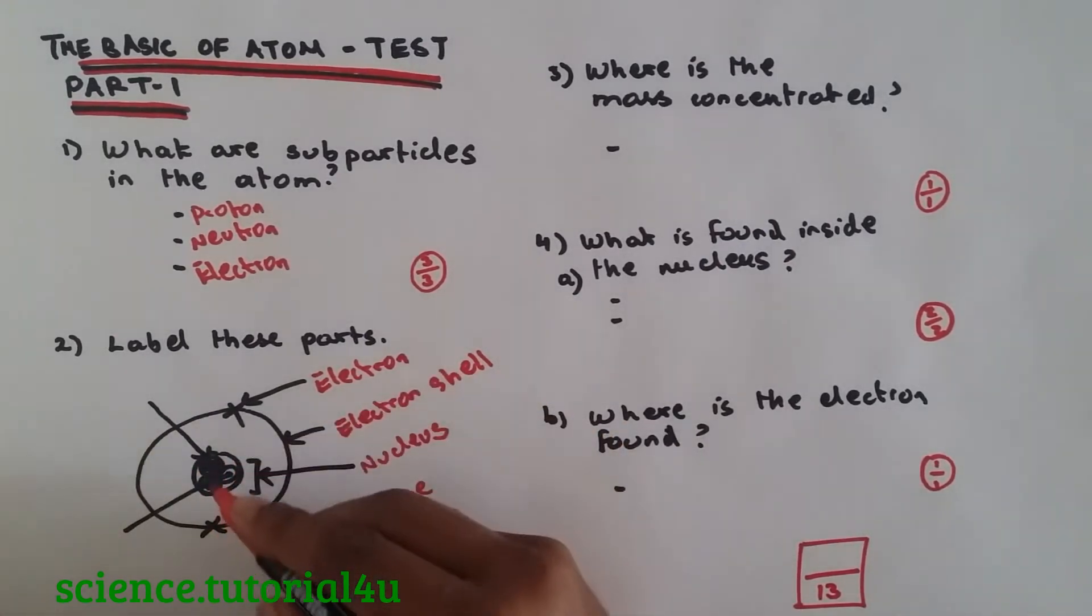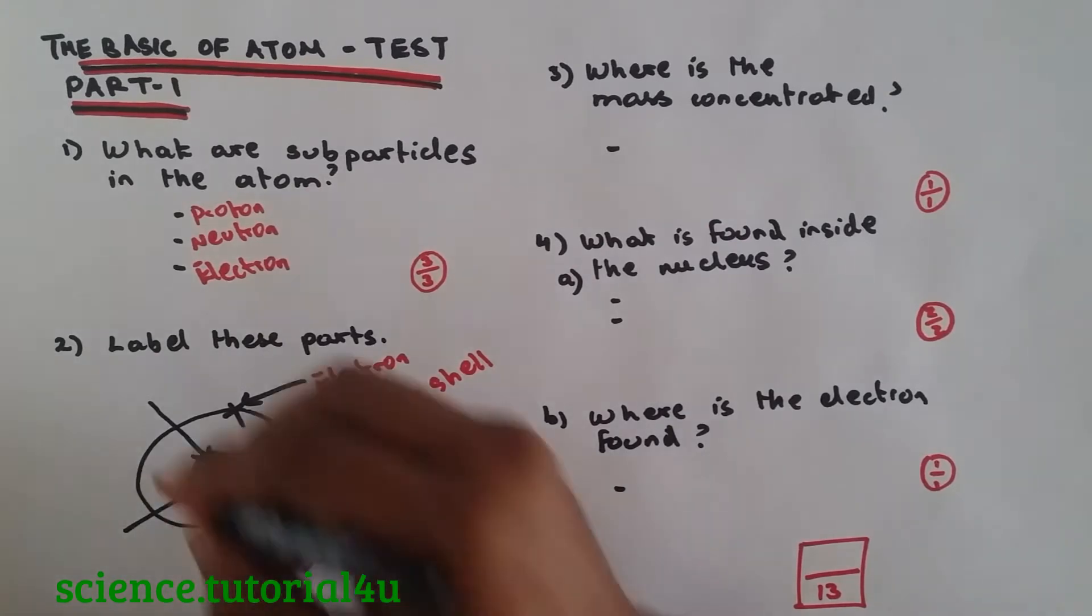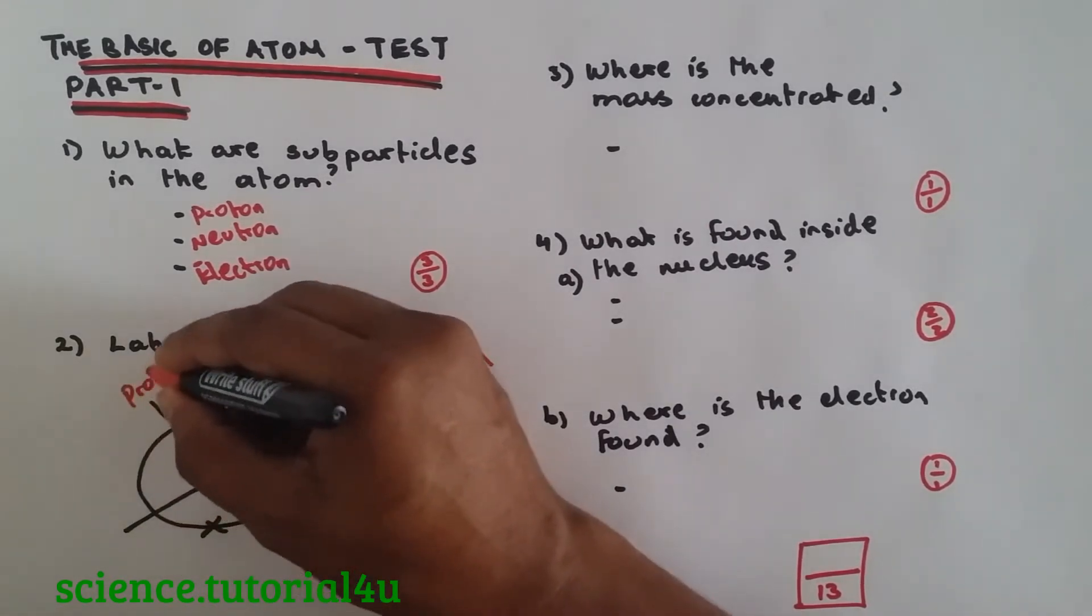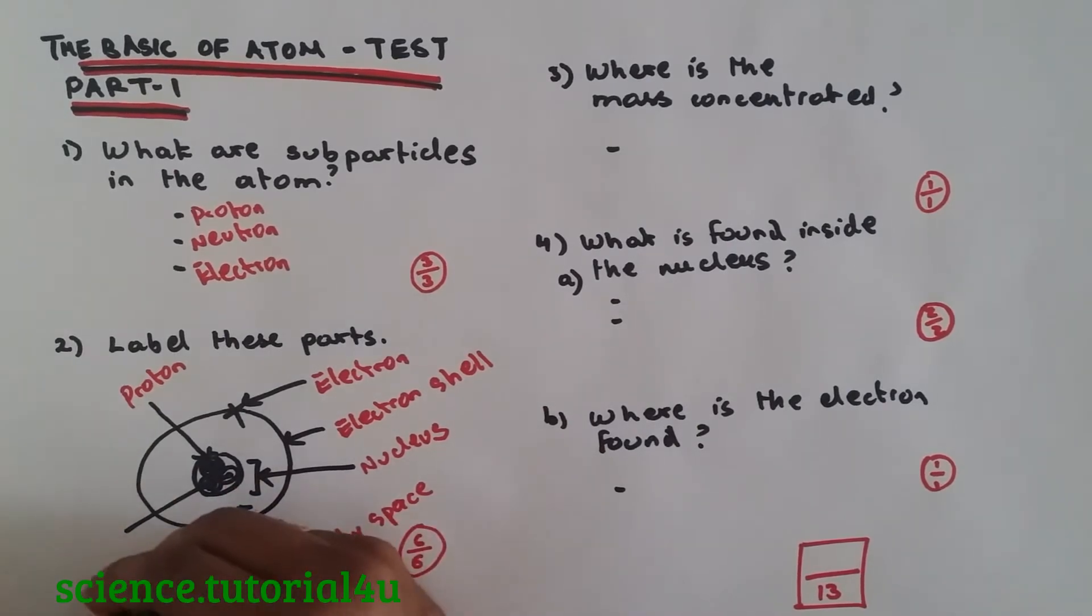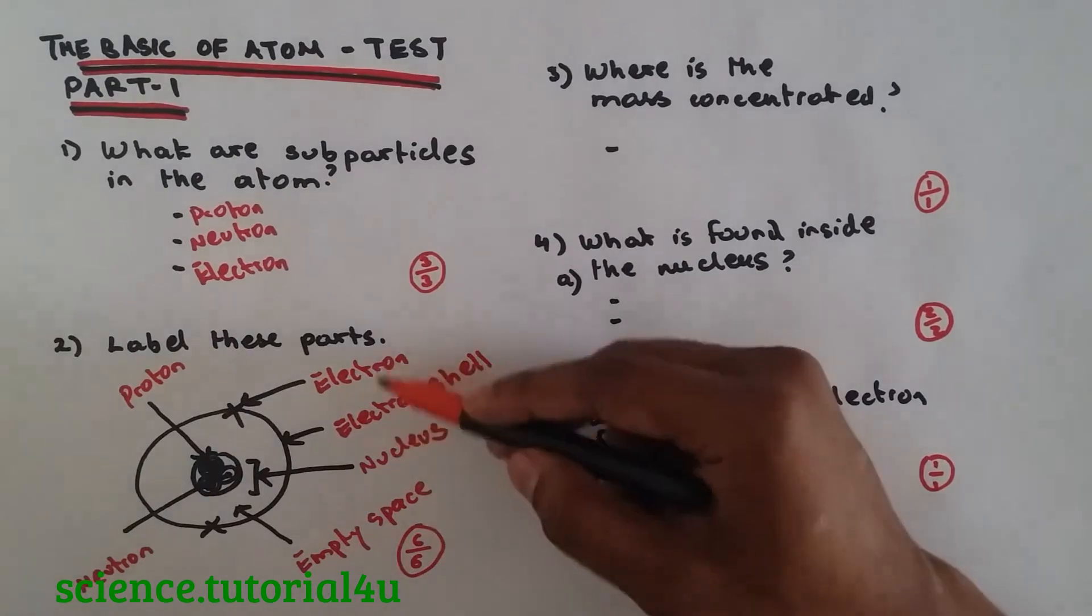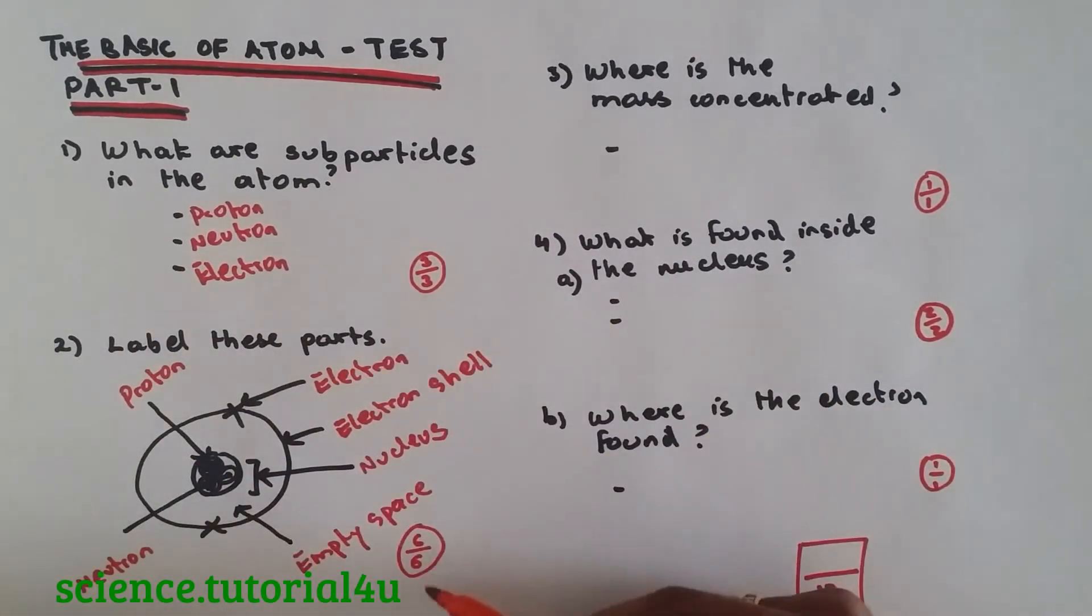Okay, shaded part over here, or you could say two subparticles, so that must be the Proton. And this is the Neutron. Okay, six parts over here, so six out of six.